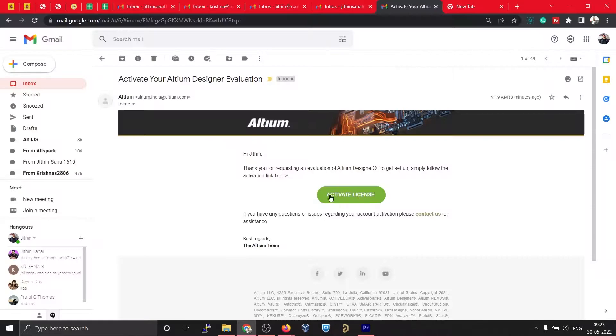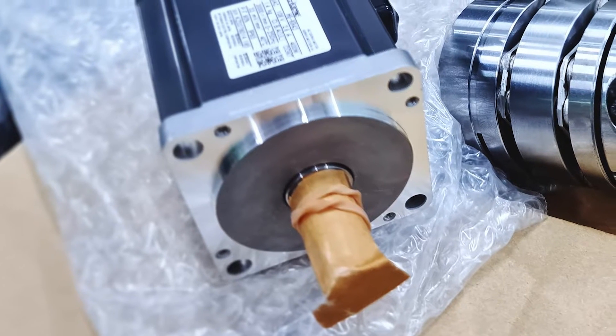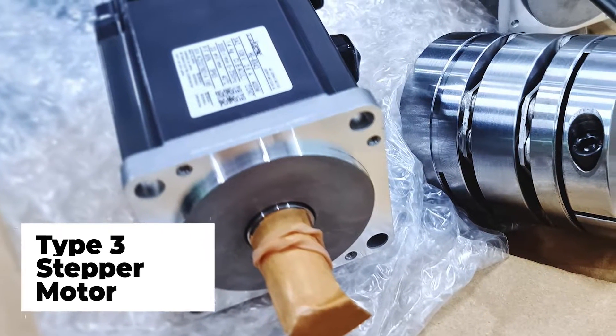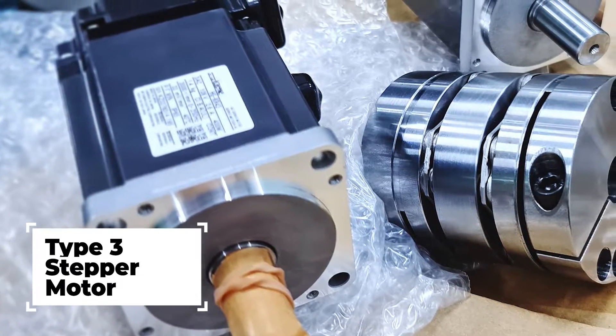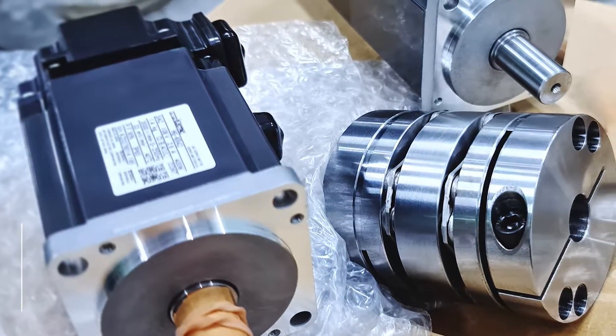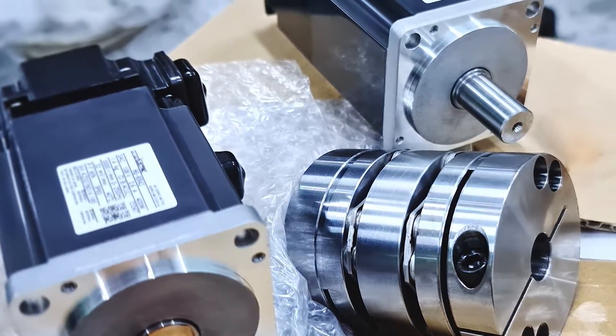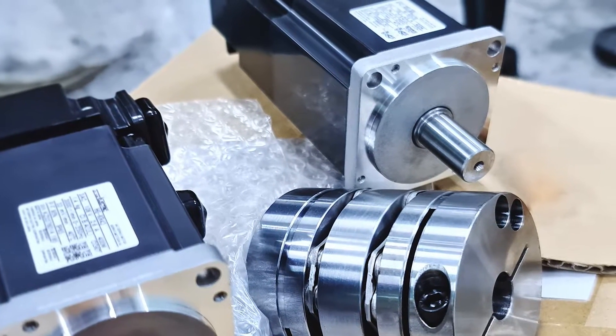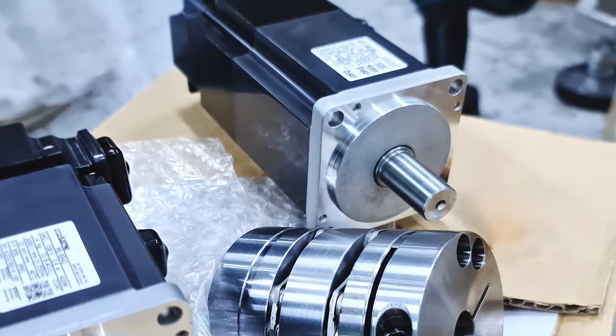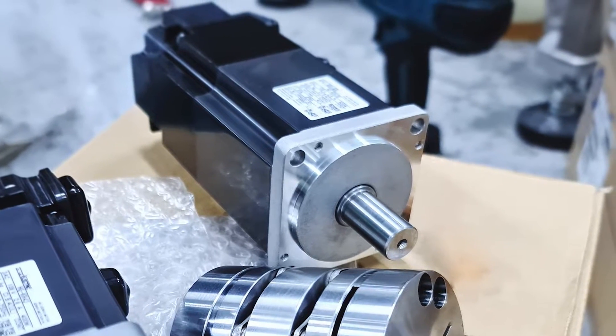Next we have the stepper motor. Stepper motor is one of the most widely used motors if we need more precise movements. Unlike continuous motion in the case of DC motors, stepper motors movements are more like step by step, and hence the name stepper. And all these precise movements can be controlled without using any feedback circuit.